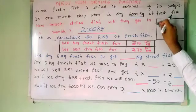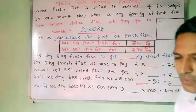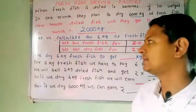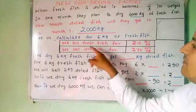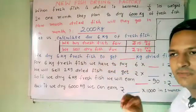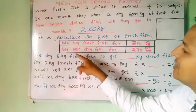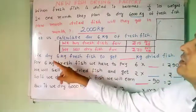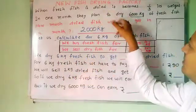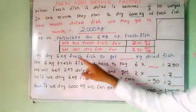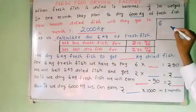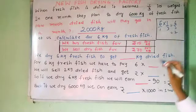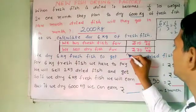Now let us calculate for 6 kg of fresh fish. We are trying to calculate how much money they are going to get for 6 kg of fresh fish. Fresh fish is bought for rupees 15 and dry fish is sold for rupees 70. Now if we dry 6 kg fresh fish, it becomes one third: 6 multiplied by 1/3 is 6 divided by 3, which equals 2. So we dry 6 kg fresh fish to get 2 kg dried fish.